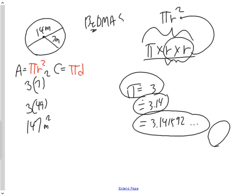The circumference — the perimeter or distance around the outside of the circle — uses the formula πd. So 3 multiplied by the diameter of 14 gives us 42 meters as the circumference of that circle.